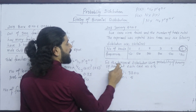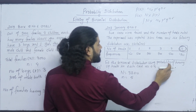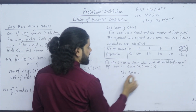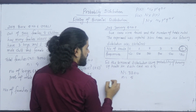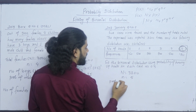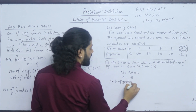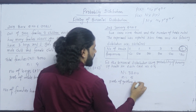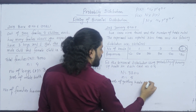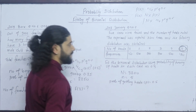Now, fit the Binomial Distribution using the probability of turning up heads in each case. The probability of getting a head P equals 0.5 in each case.